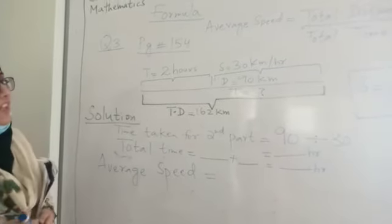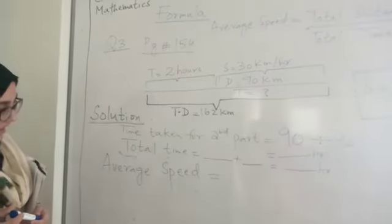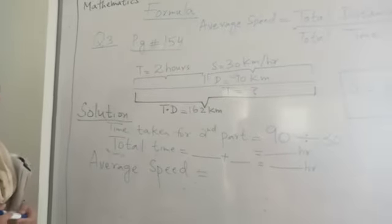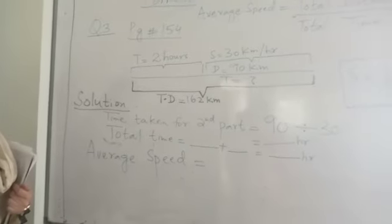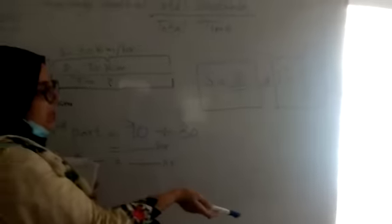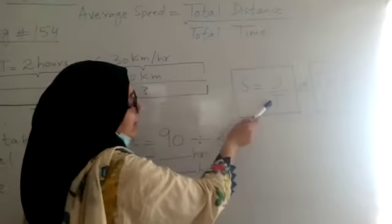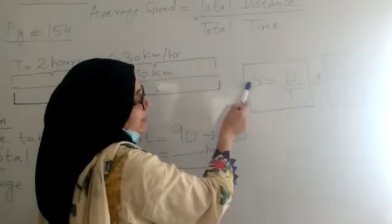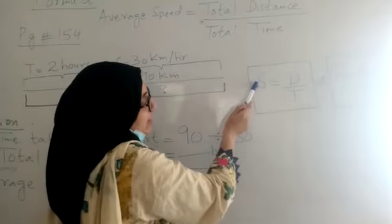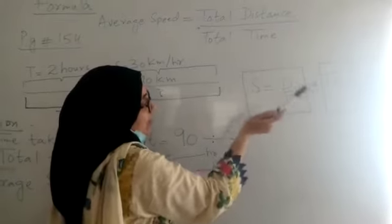In average speed our requirement is finding the total time first, and then we will find the average speed by the formula. As you know, speed is equal to distance upon time. If we are finding the time, it is going to be divided and shifted to the other side, it will be multiplied. So time equals distance divided by speed. So the formula for time is distance upon speed.